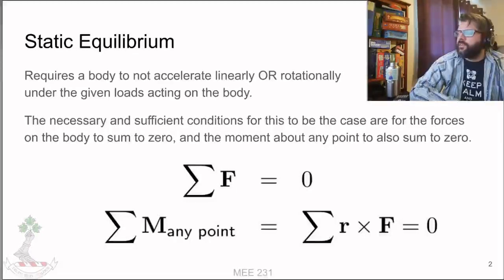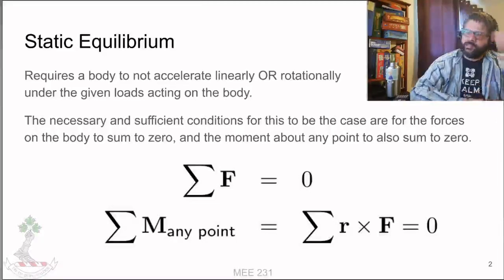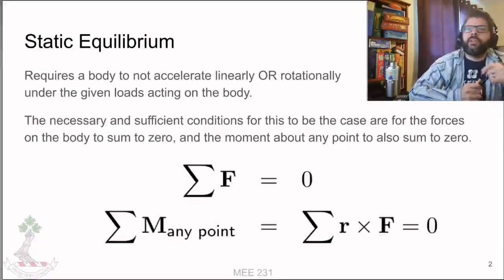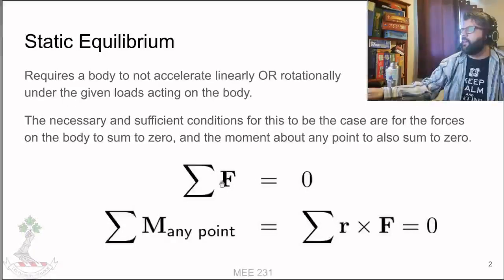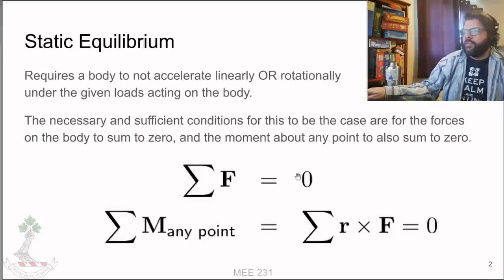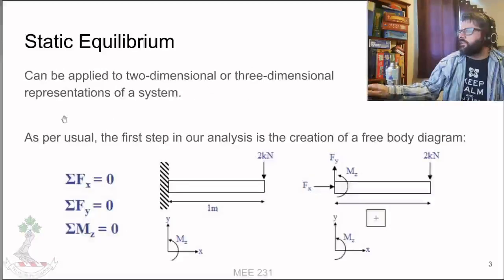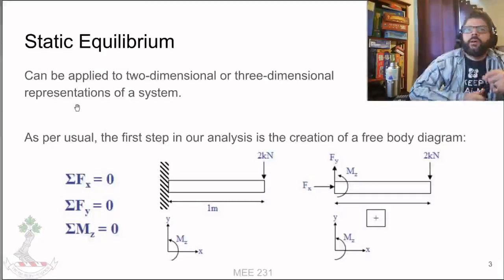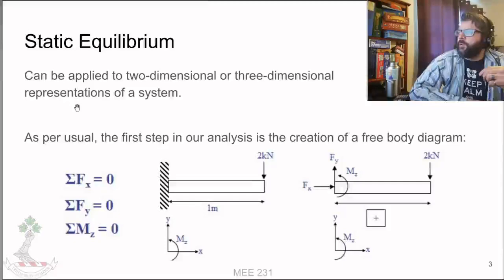In order for a body to be in equilibrium, the conditions are: the forces on the body must add up to zero, and the moment about any point must also add up to zero. These are based upon our vector notations and can be applied to two-dimensional or three-dimensional representations of a system.